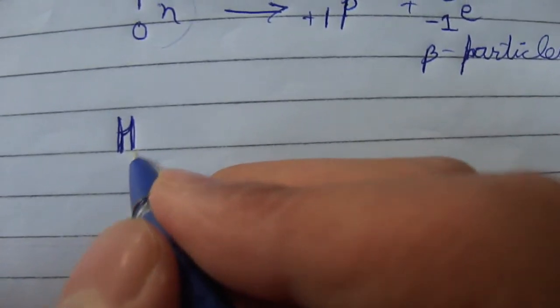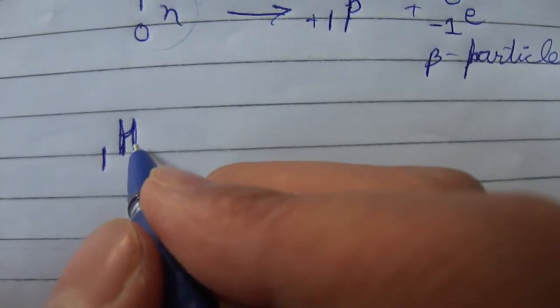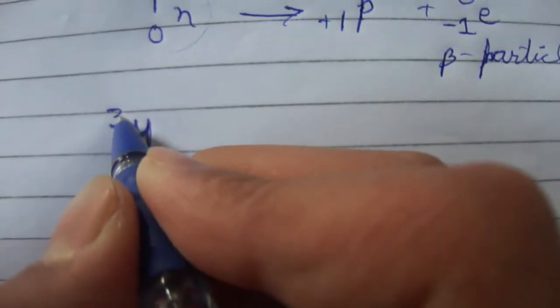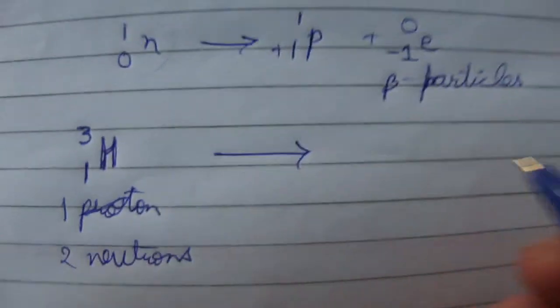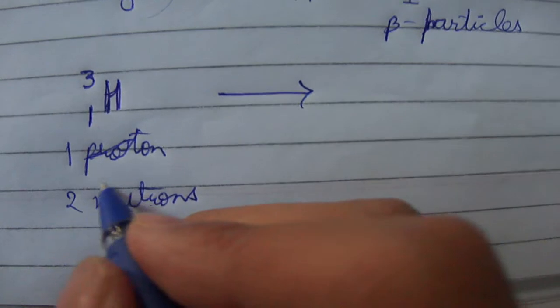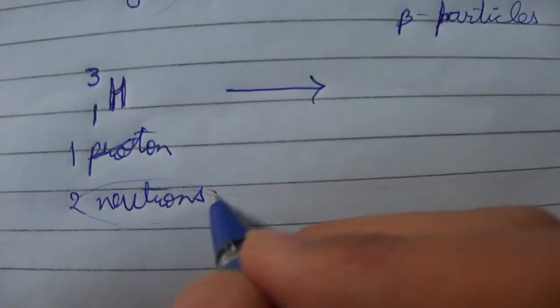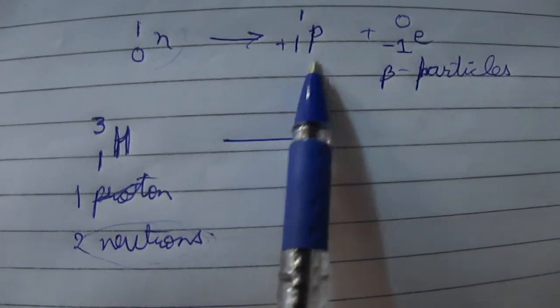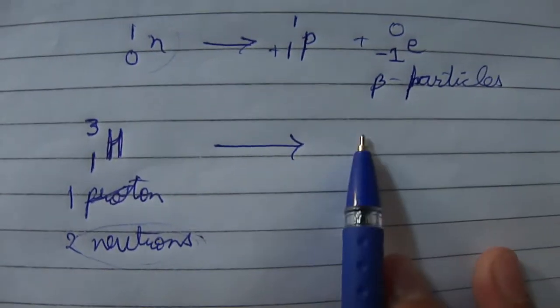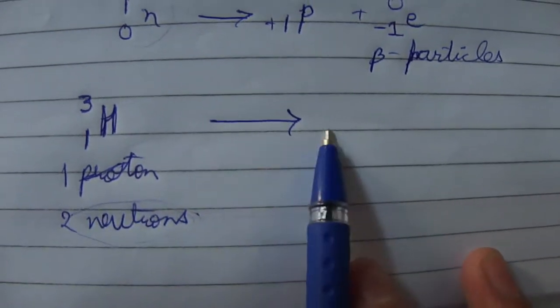The beta emission of tritium takes place like this: the tritium atom with atomic number one and atomic mass three has one proton and two neutrons. One of the two neutrons is converted into one proton and one electron. This new proton remains in the nucleus of the atom.